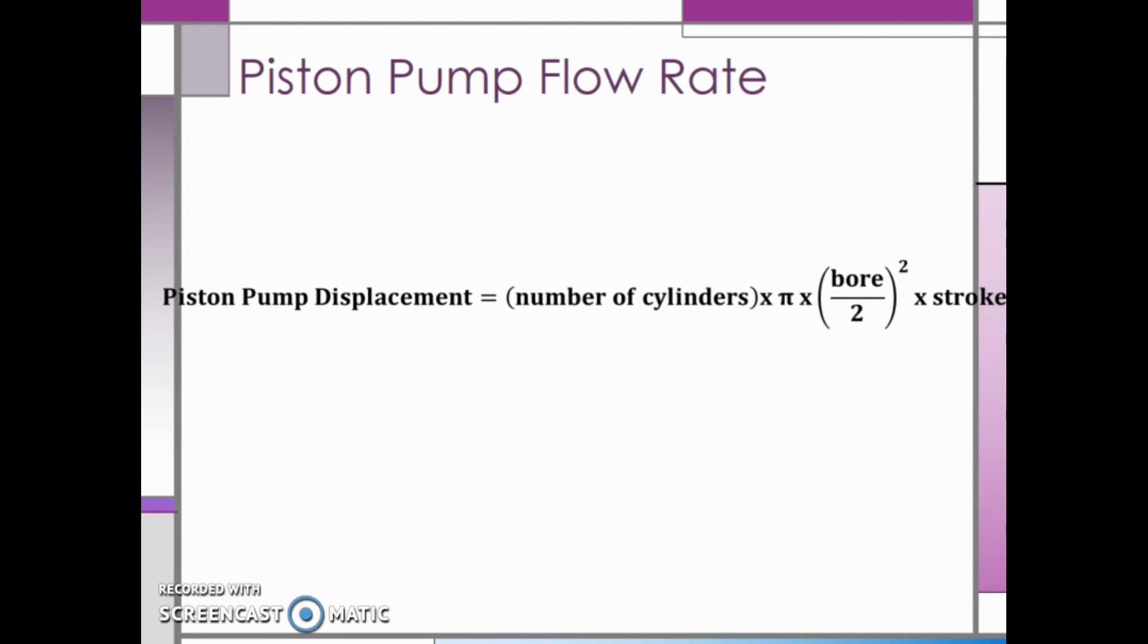The piston pump displacement is equal to the number of cylinders multiplied by pi or 3.14 multiplied by the bore divided by 2 squared multiplied by the stroke. The bore and the stroke need to be in inches because our piston pump displacement will have units of cubic inches.